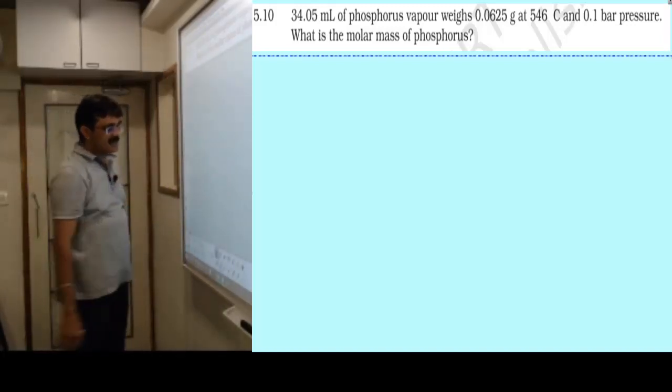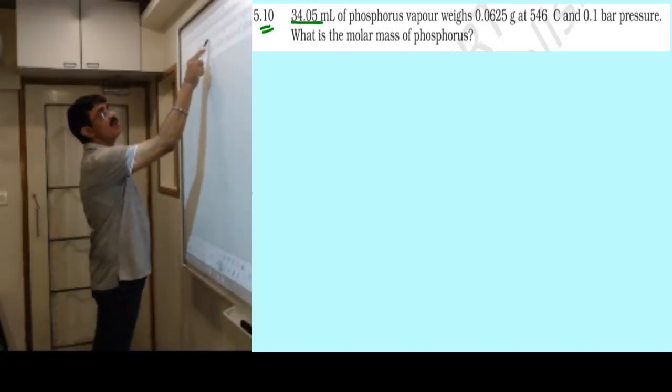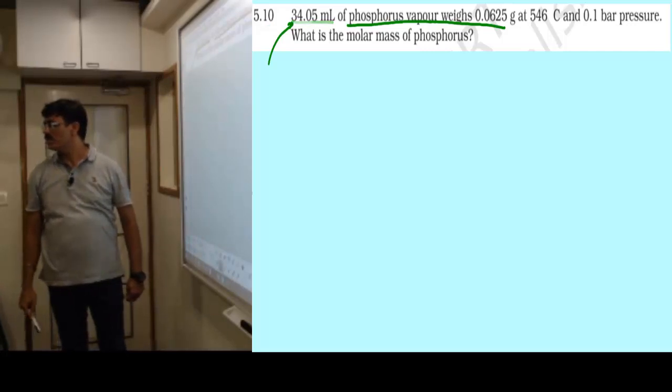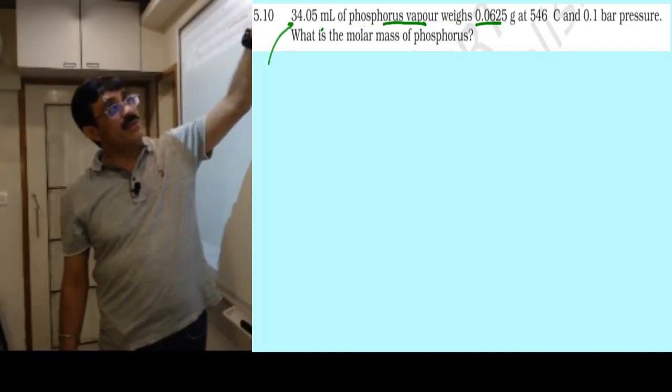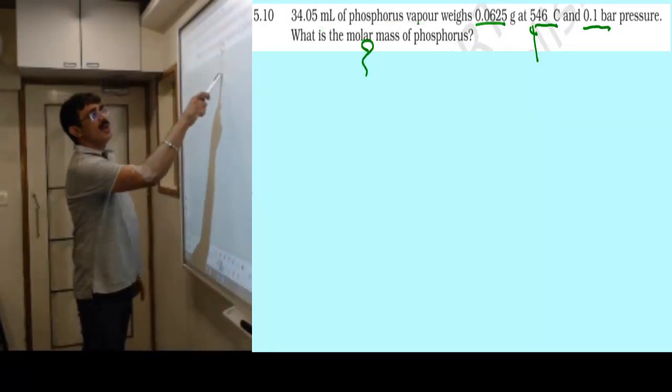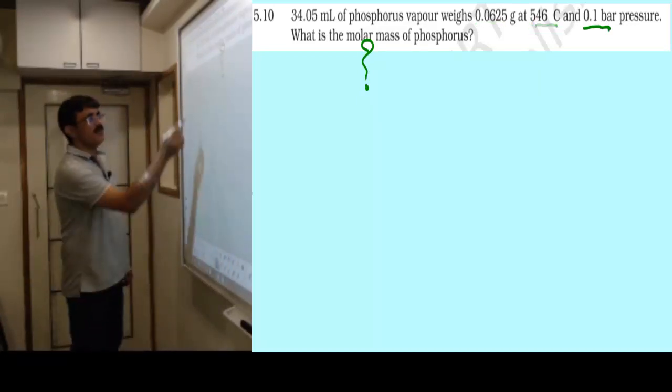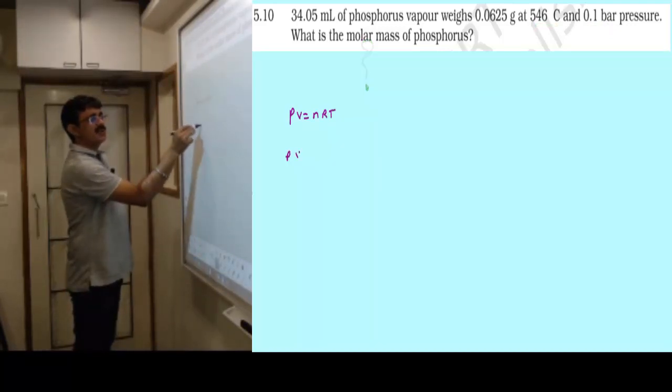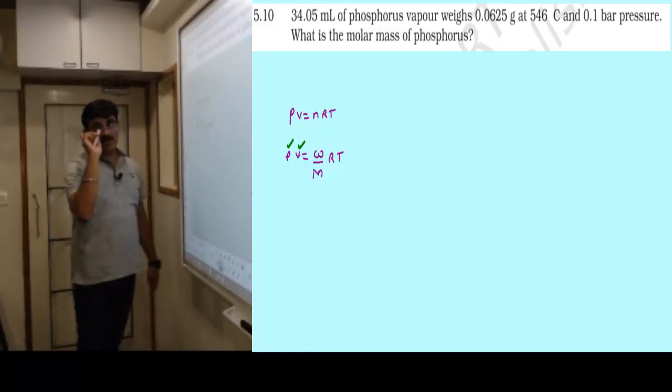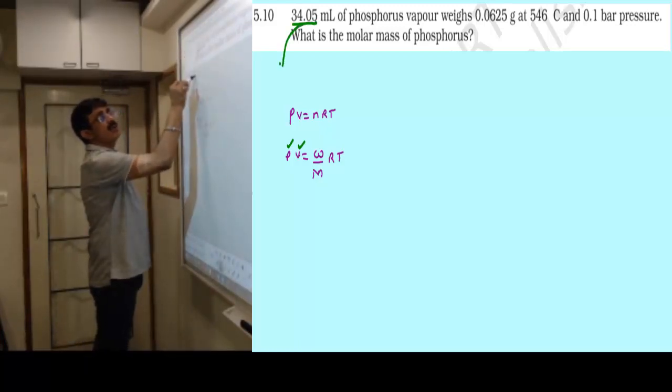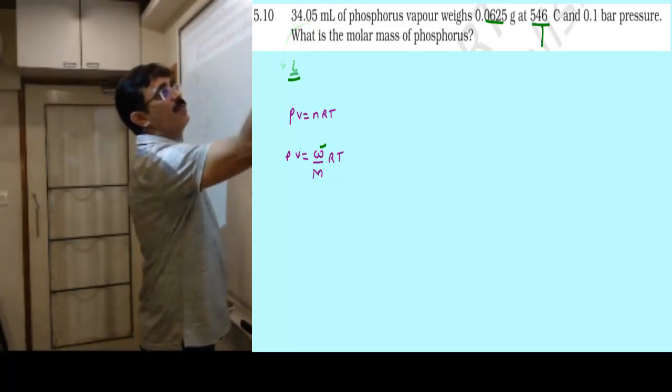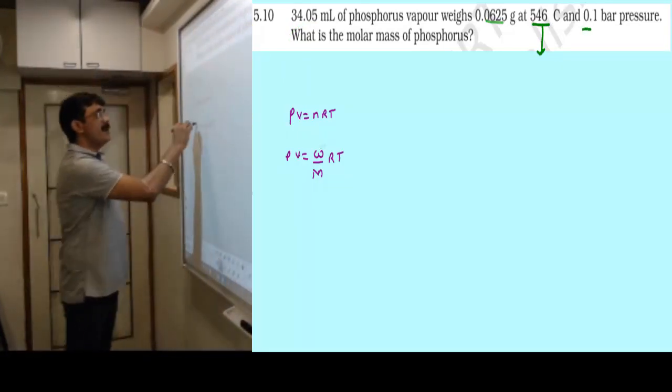Question number 5.10 says: 34.05 milliliter of phosphorus vapor weighs 0.625 gram at 546 degree Celsius and 0.1 bar pressure. What should be the molar mass? What does 34.05 milliliter mean? That is volume of the gas. Weight has been given, temperature and pressure given. I think we can use the simple formula PV equals nRT, which equals PV equals weight upon molecular weight times RT.